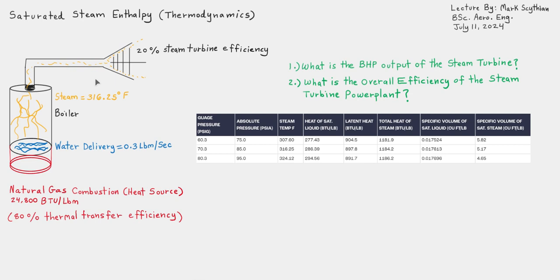The steam's energy is converted into the turbine's mechanical energy — steam power to mechanical power. We have two questions typical of saturated steam enthalpy problems, in this case relevant to a steam turbine. Number one: what is the brake horsepower output of the steam turbine? And number two: what is the overall efficiency of the steam turbine power plant?